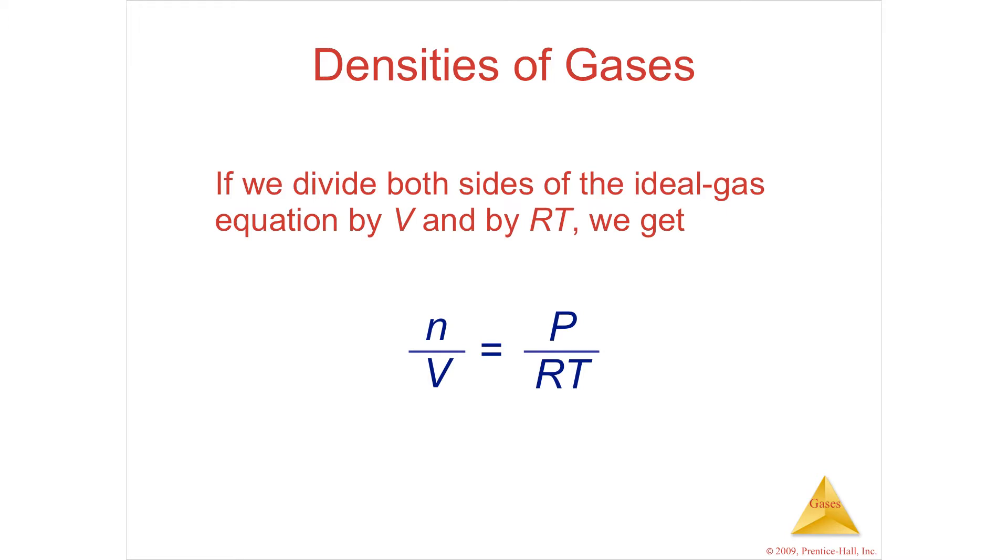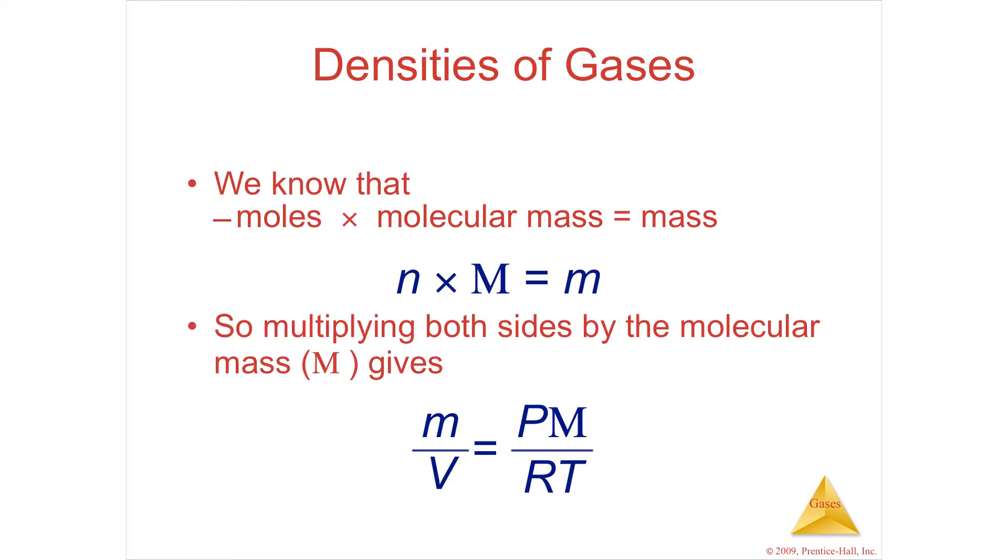Density is mass divided by volume. If I have moles divided by volume, I can turn moles easily into mass by going through the periodic table. Number of moles times the molecular mass, which is all of the atomic masses of the molecule added together, multiply that, you've got the mass in grams of whatever you're looking at.